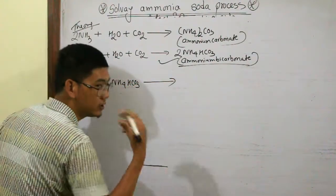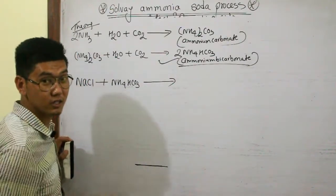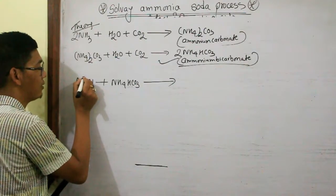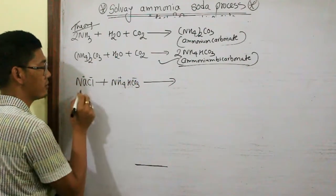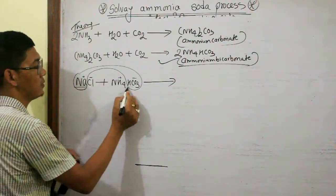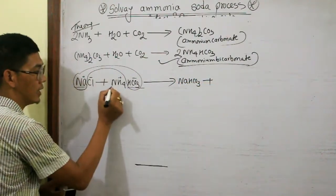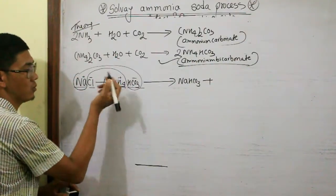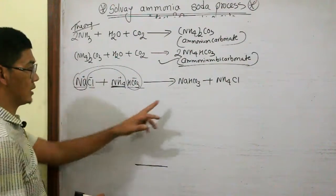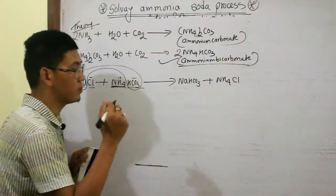Now, ammonium bicarbonate reacts with brine solution (NaCl). Sodium chloride reacts with ammonium bicarbonate. Using the double displacement reaction concept — positive and negative radicals — NaCl plus HCO3 minus gives sodium bicarbonate.